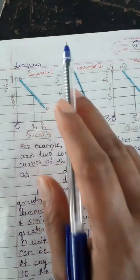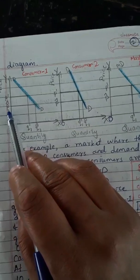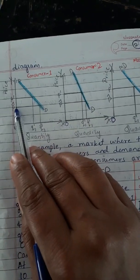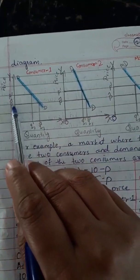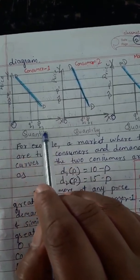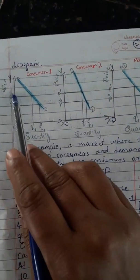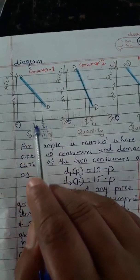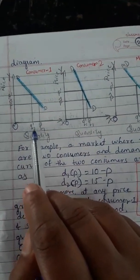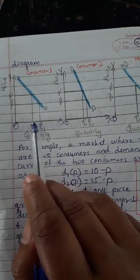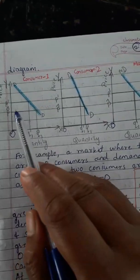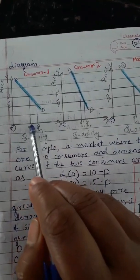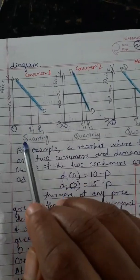First, we look at consumer one. Let P-cap be 10 rupees and P1 be 15 rupees. When the price is 10 rupees, the consumer buys quantity Q-cap. When the price increases from P-cap to P1, the consumer buys less — quantity Q1 and Q1-dash. The difference shows that when price is high, the consumer purchases less — only Q1-dash units.